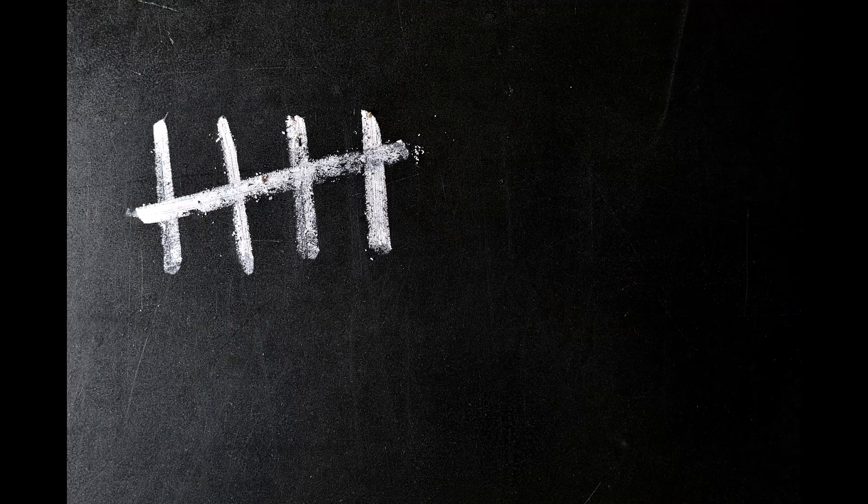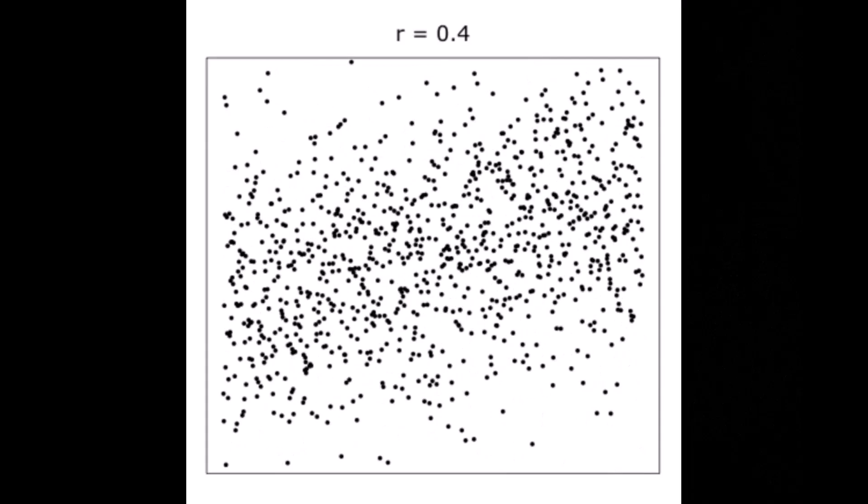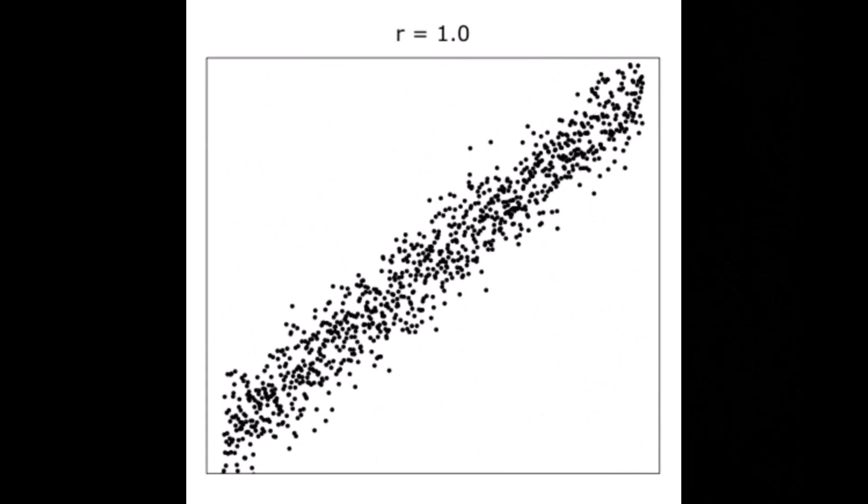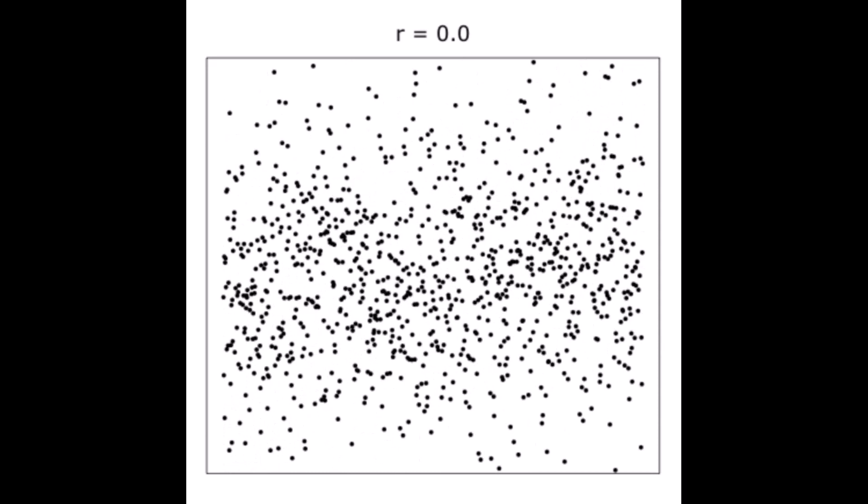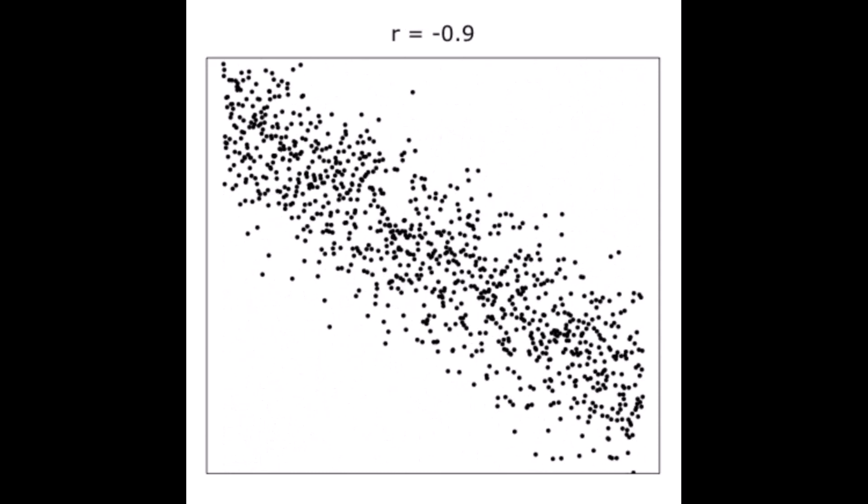To do this, we first collect quantitative data, like survey ratings, and then calculate a correlation coefficient. This statistic describes the strength and direction of this relationship. Its value ranges from negative one to positive one.